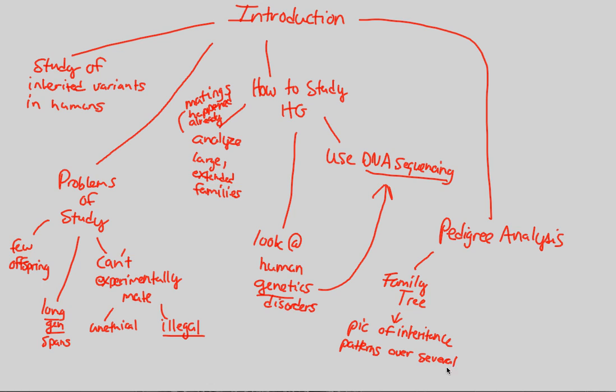And the great thing about this is that this is actually over several generations. So what problem have we combated by just looking at a pedigree? This one right here. Long generation spans or even the few offspring problem. We already have it there because we utilize a family tree. You can basically state that in this How to Study Human Genetics, when we analyze large and extended families with matings that already happen, we're basically doing this. We're looking at a family tree and analyzing what is known as a pedigree.